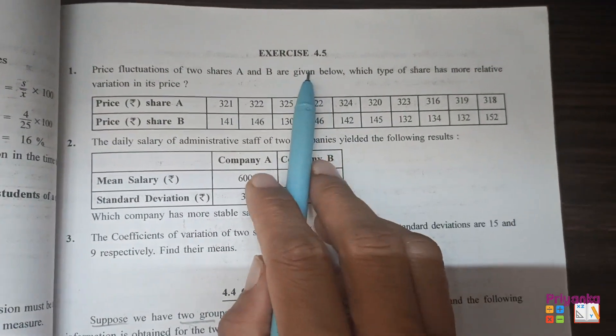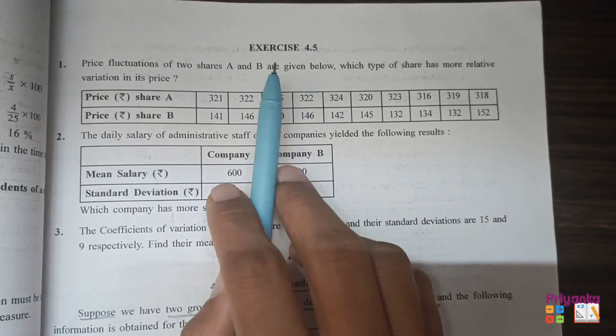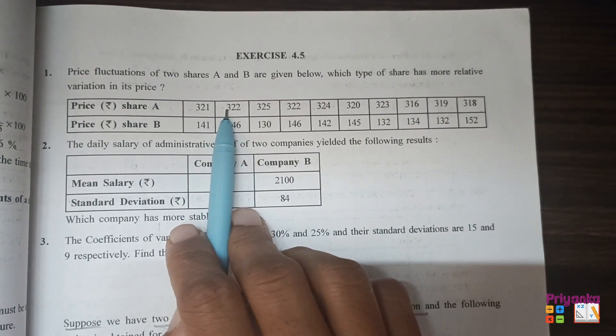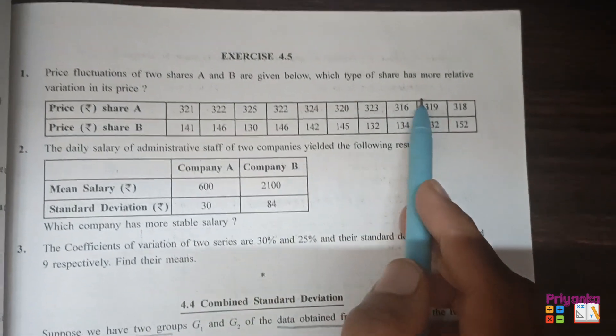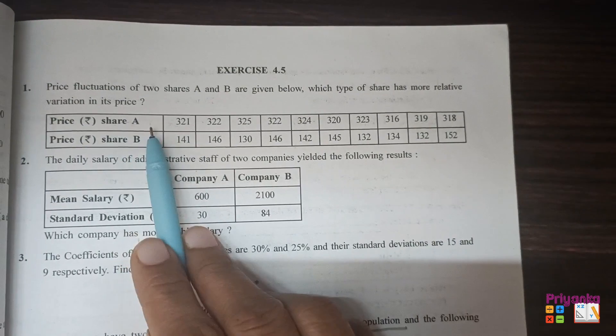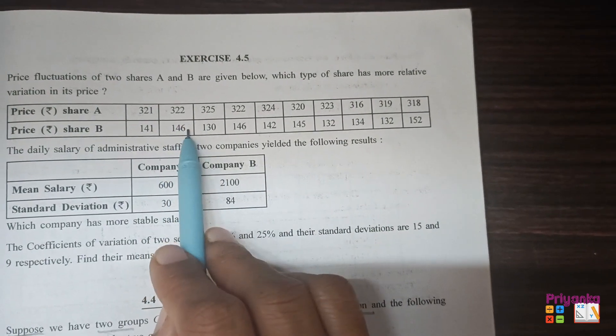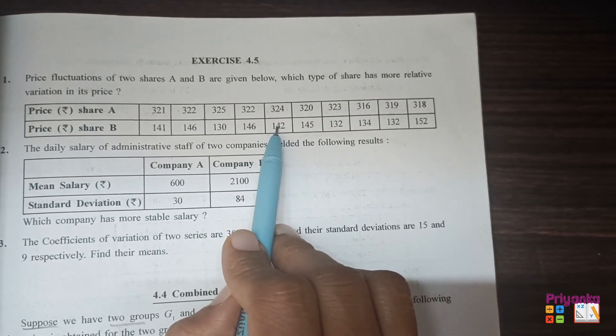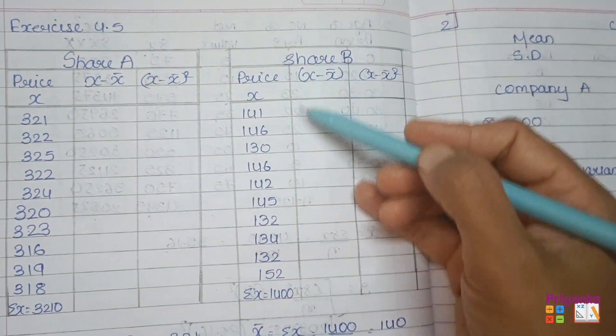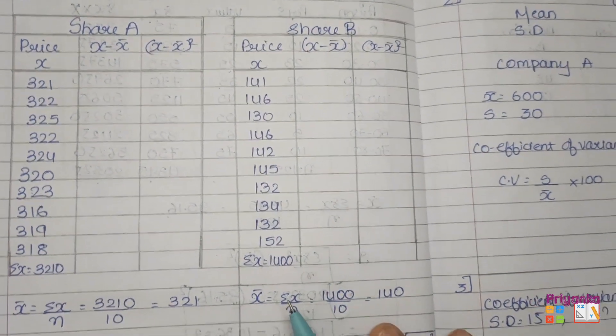Exercise 4.5. Let me tell you one thing from the last exercise 4.4 - the measure of dispersions method we have completed. Here you can see the question is price fluctuation of two shares A and B are given below. Which type of share has more relative variation in its price? The variation in the price of share A and B is given. We are going to make a comparison. When the information is given related to comparison, we have to find out coefficient of variation. First let's take all the information in the book. Share A information I have kept separately, share B information kept separately.